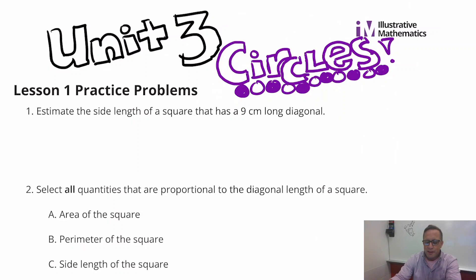Number 1, estimate the side length of a square that has a 9 centimeter long diagonal. Now this has to do with the lesson today. This directly relates to the constant of proportionality that we've determined, and we were looking at the side length and the diagonal.